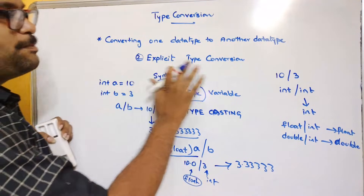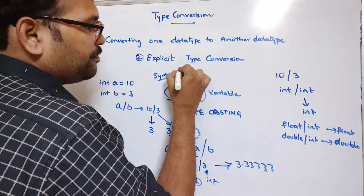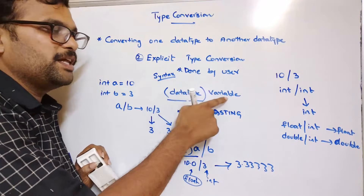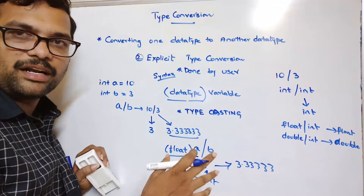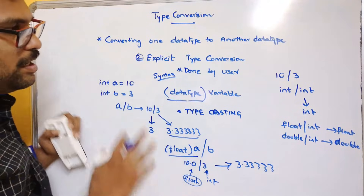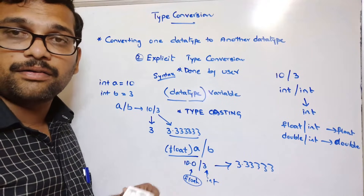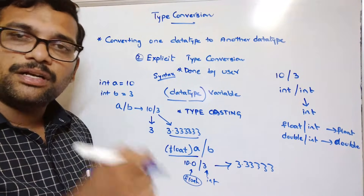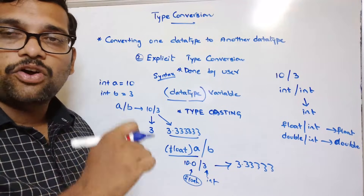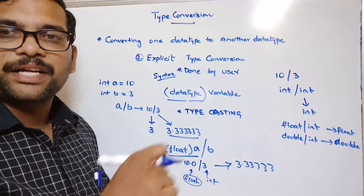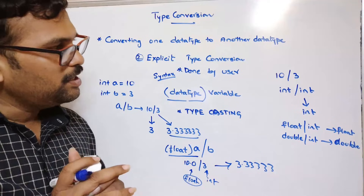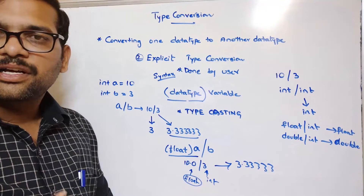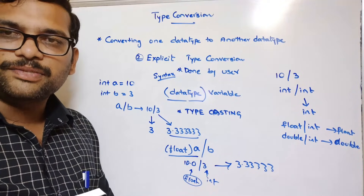This type of conversion is called explicit — it must be done by the user using the syntax: parenthesis, data type, followed by the variable, to forcibly convert one data type to another. So we have two different types: type conversion refers to implicit type conversion, and typecasting refers to explicit type conversion done by the user. Hope you understood this. If you have any doubts, feel free to post in the comment section. If you enjoyed this session, like, share with your friends, and don't forget to subscribe to our channel. Thanks for watching.